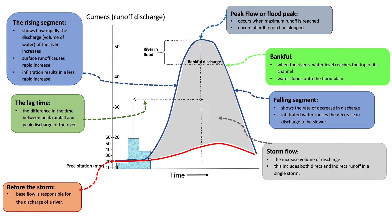Here in grey, the area underneath the peak flow to the red base flow line is the storm flow. The storm flow is the increased volume of discharge and includes both direct and indirect runoff in a single storm.